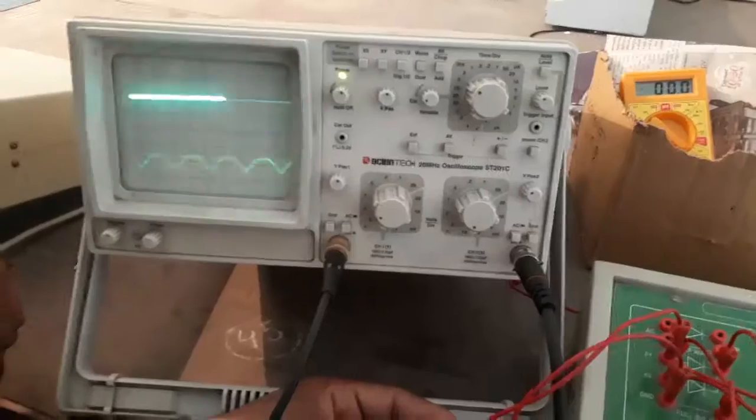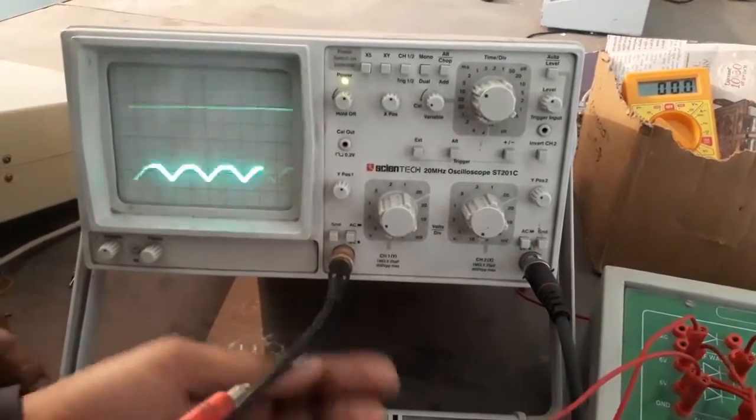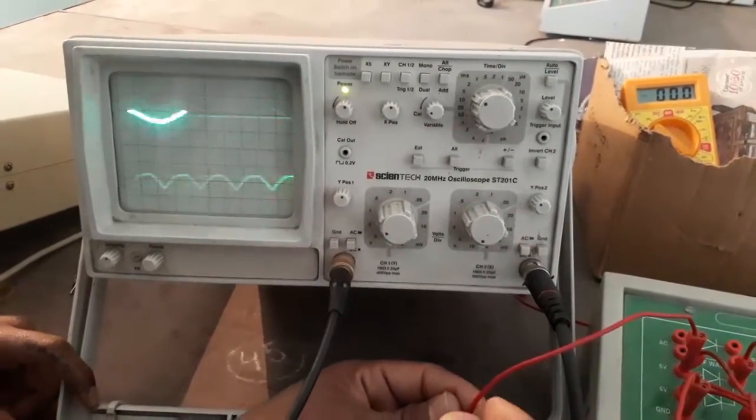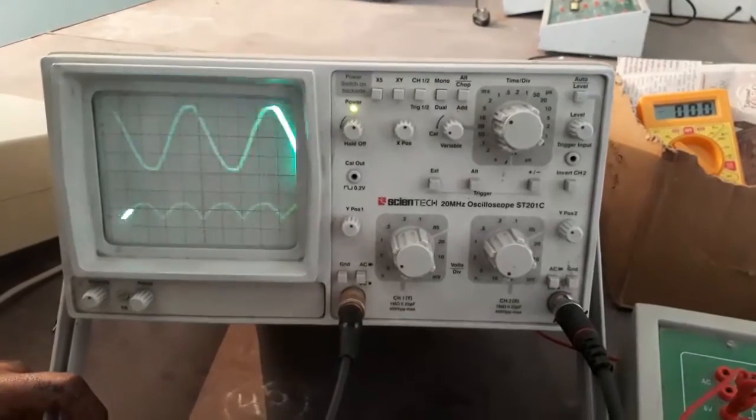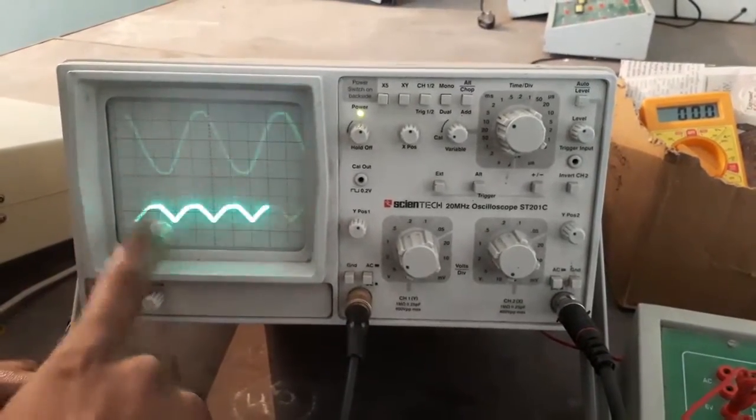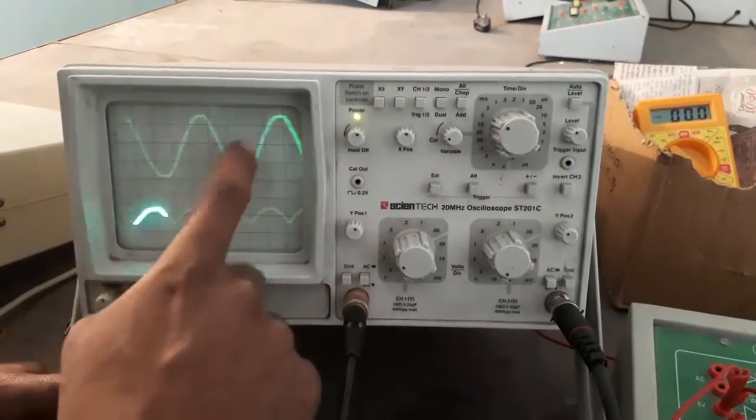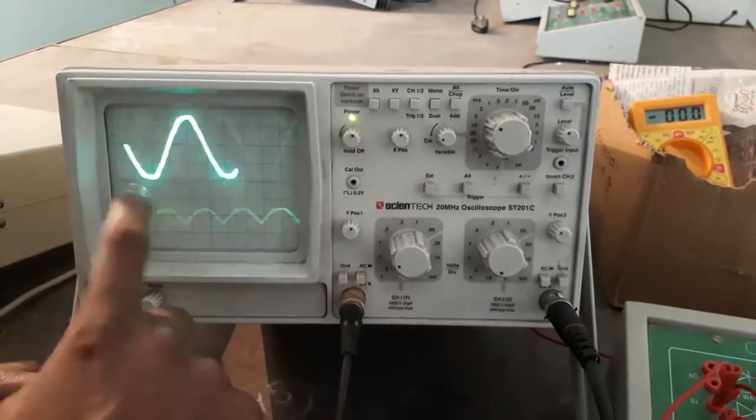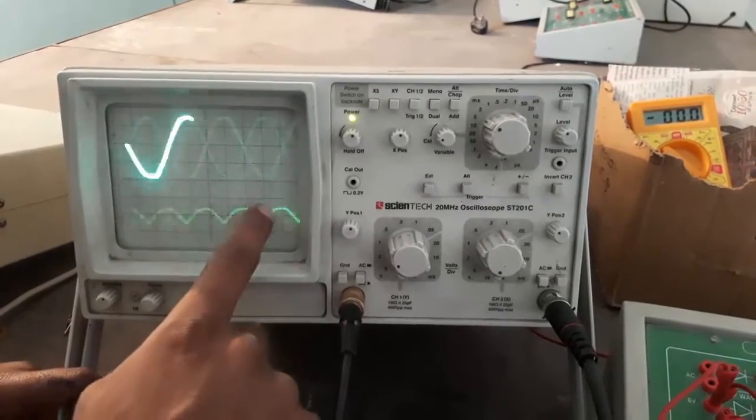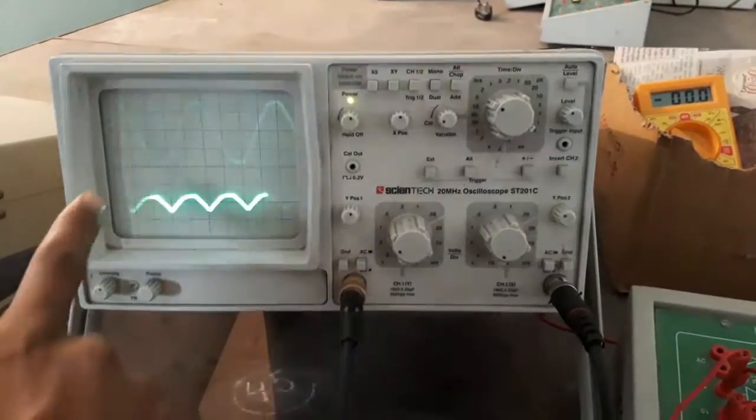By connecting the second channel, we can look at the AC signal. This is the AC signal and this is the DC signal output signal. This is the AC signal which we have applied, 12 volts. This is how ripples are going on and this is the DC output which is getting over here.